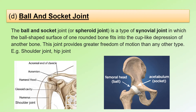Now, let's look at the ball and socket joint. The ball and socket joint, or spheroid joint, is a type of synovial joint in which the ball-shaped surface of one rounded bone fits into the cup-like depression of another bone. This joint provides greater freedom of motion than any other type of joint. Examples are the shoulder joints and hip joints. In the shoulder joint, we can see the head of the humerus fits into a socket called the glenoid cavity. This is a picture of the hip joint. Here, we can see this part labeled the acetabulum, and this is the deep socket which the femur fits in.